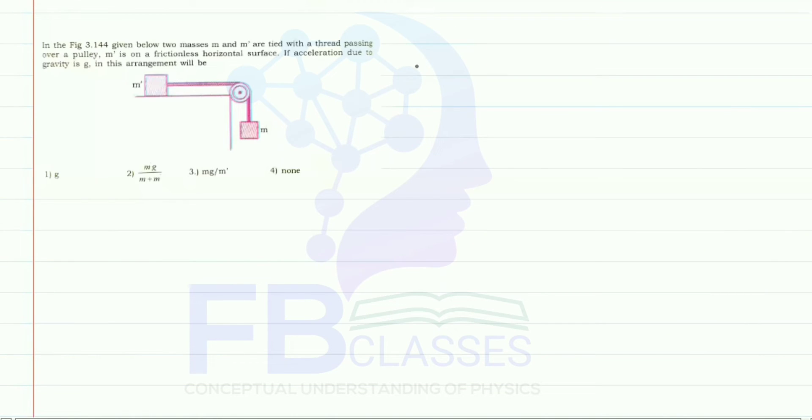Here I'm finding out the net acceleration. a_net is equal to F_net upon m_net, right? So a_net is equal to, how much is F_net?